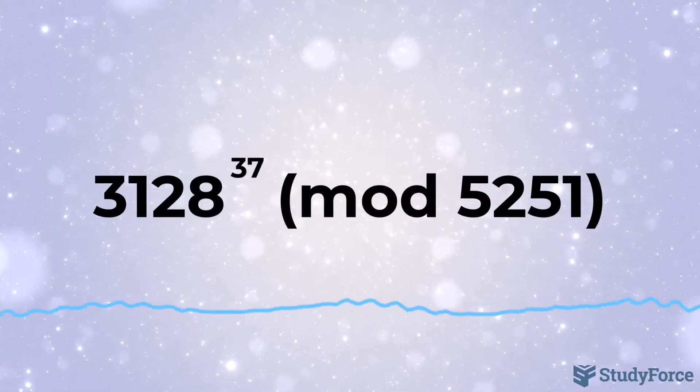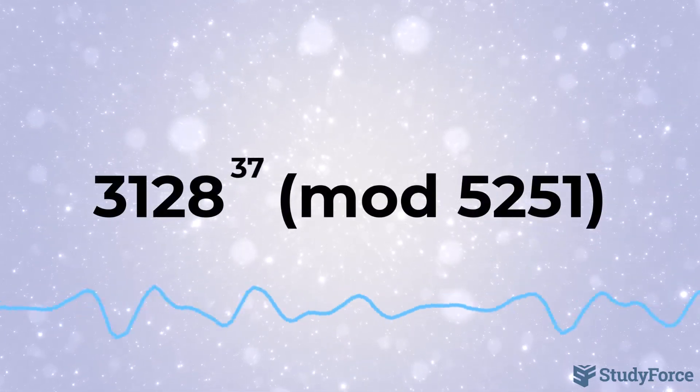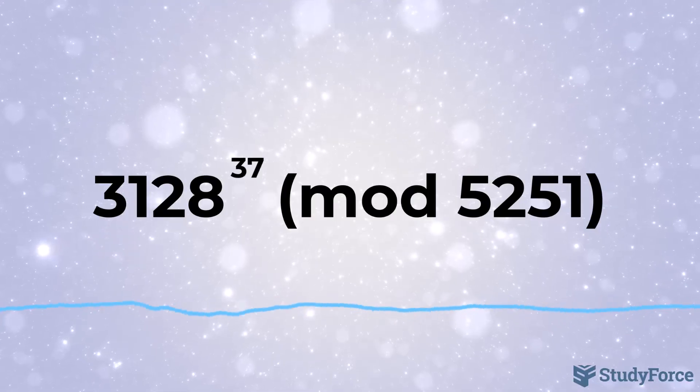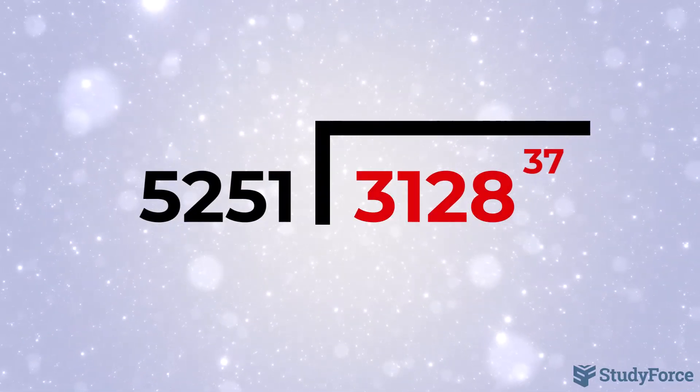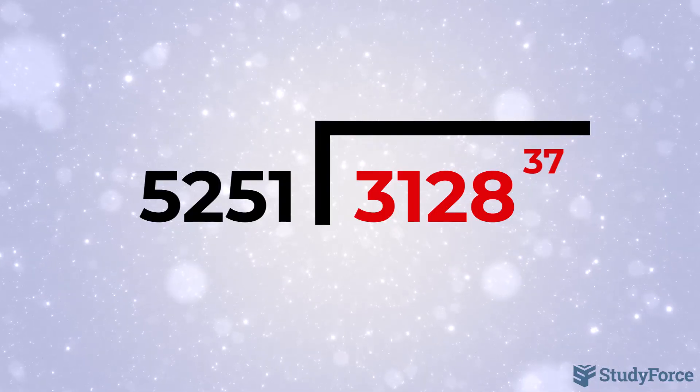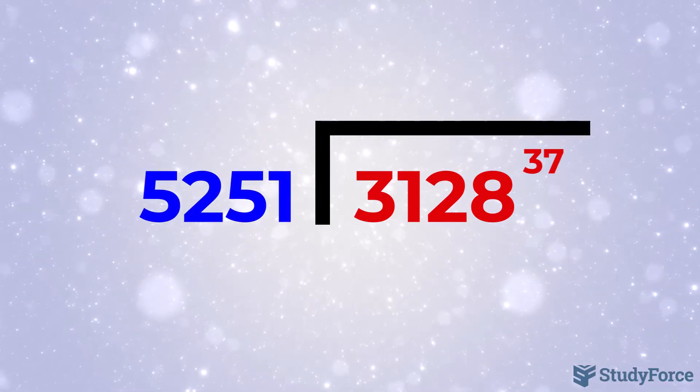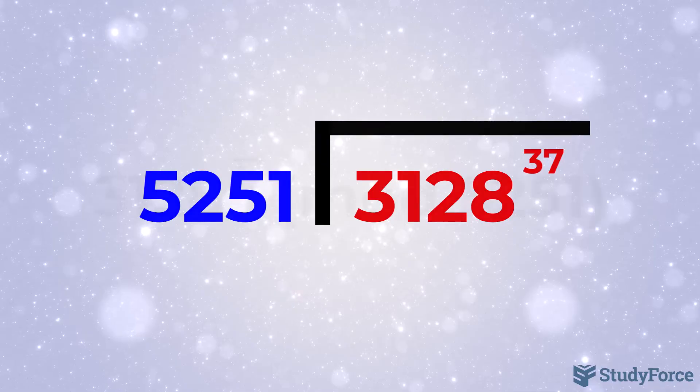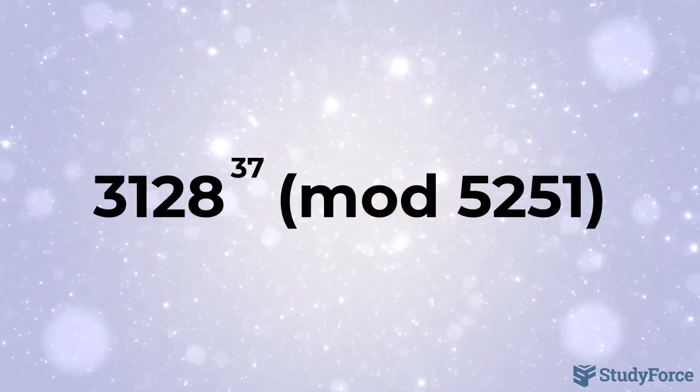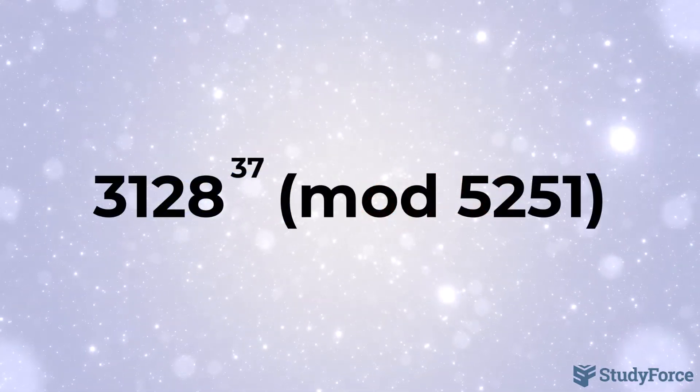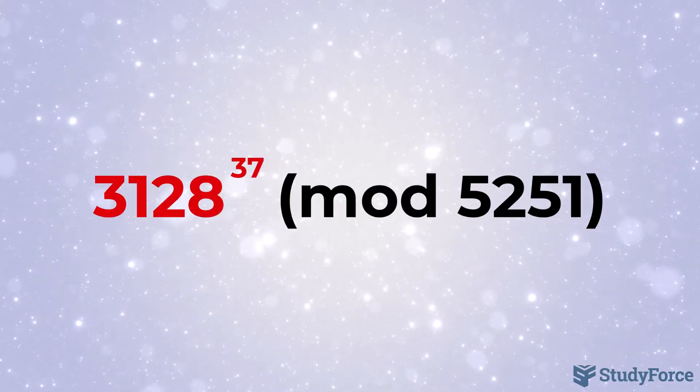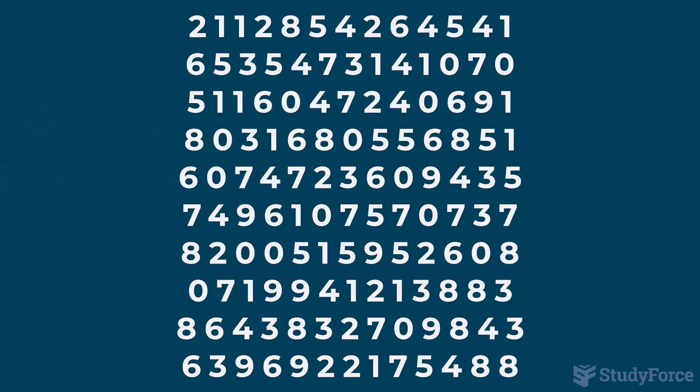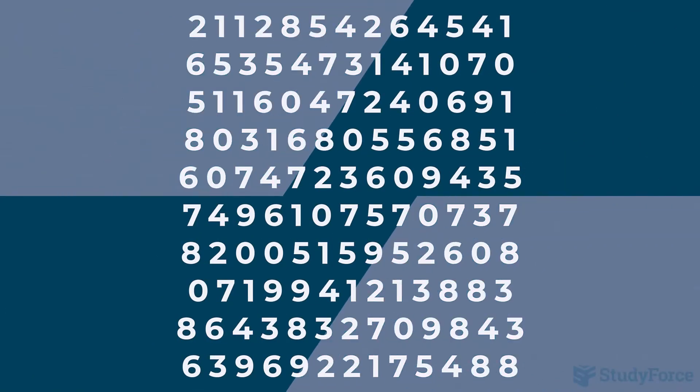Suppose you're tasked with computing 3128 raised to the power of 37 mod 5251. This means finding the remainder when 3128 to the power of 37 is divided by 5251. While calculating modulo n is straightforward in principle, the challenge here lies in the size of the value of 3128 to the power of 37, which results in a number with 130 digits. This is far beyond what most calculators can handle.